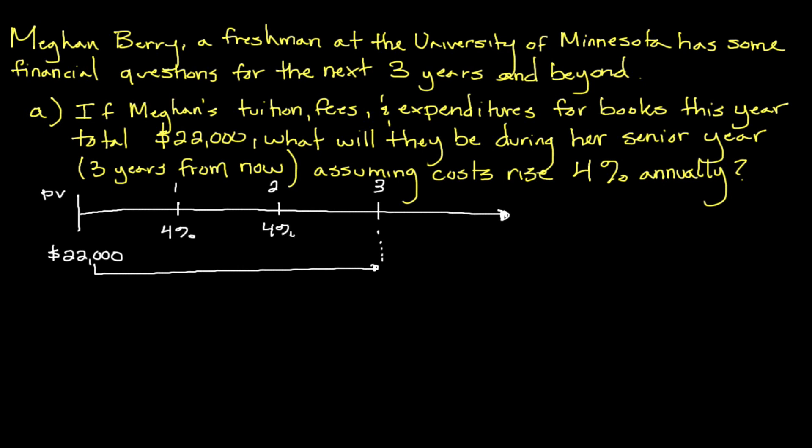We're taking this $22,000 and trying to figure out what it's going to be worth in year three. The other part of this question is the four percent costs annually — every single year our costs are going to go up by four percent. This is a pretty simple question you could probably do without any formula, but I'm going to show it to you anyway because I think it's helpful for understanding it on a basic level, and then you can apply it to more challenging scenarios.